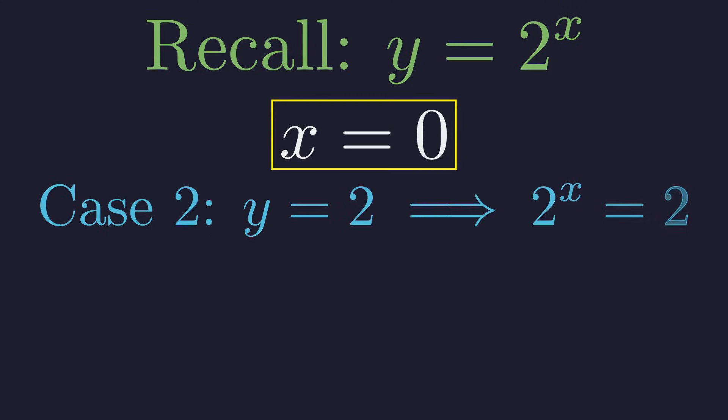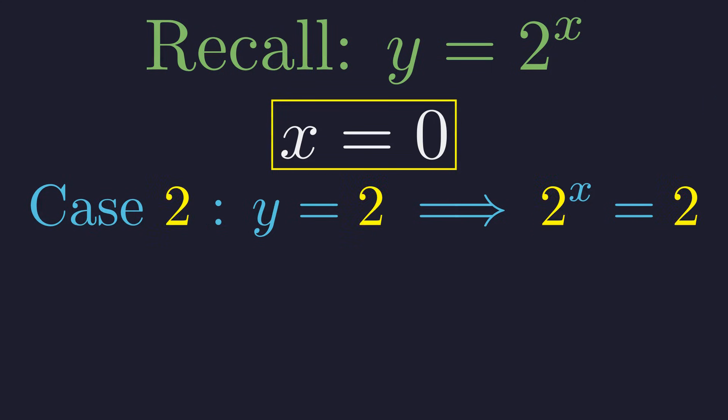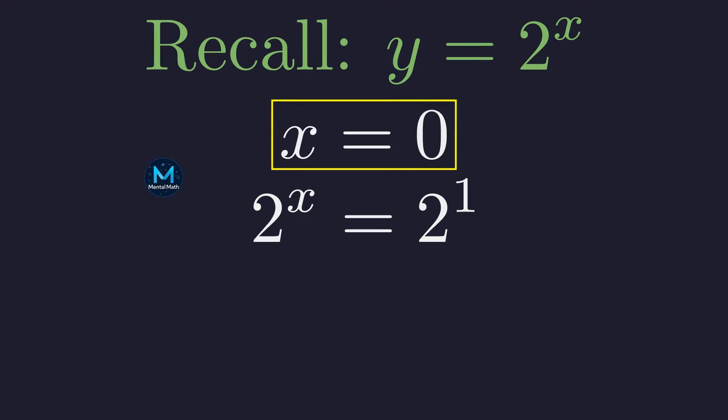In our second case, we set y equal to 2, which implies 2 to the power of x equals 2. Similarly, we can write 2 as 2 to the power of 1. This gives the equation 2 to the power of x equals 2 to the power of 1. Equating the exponents gives our second solution: x equals 1.